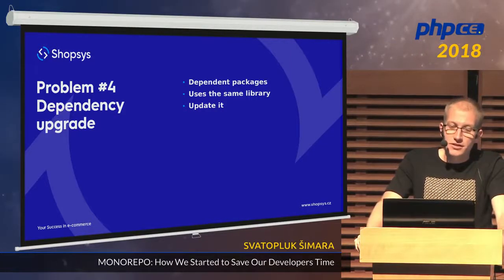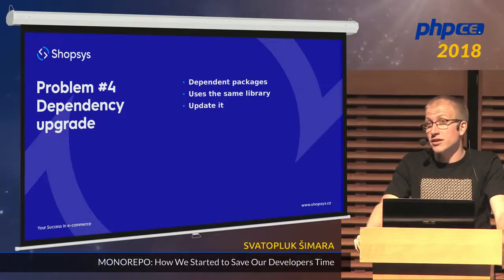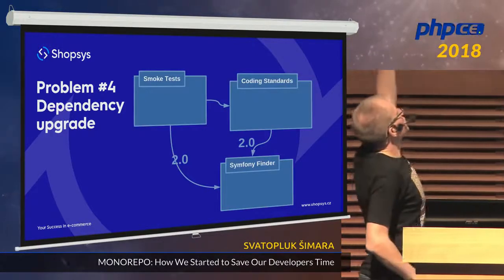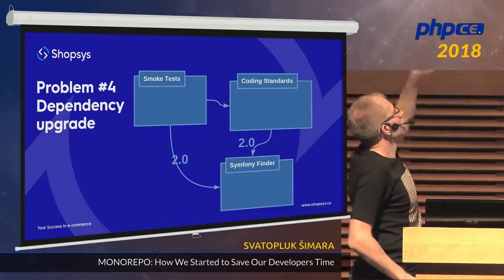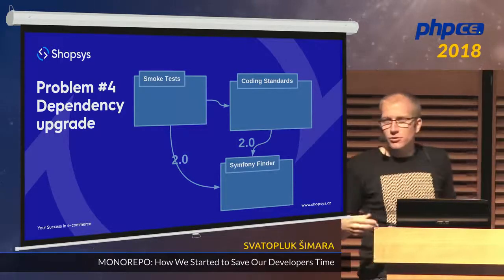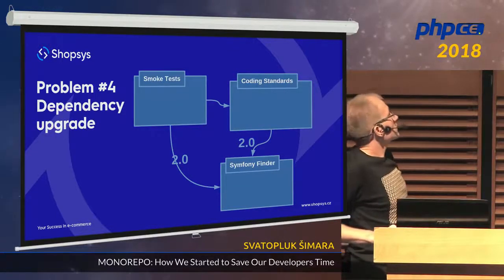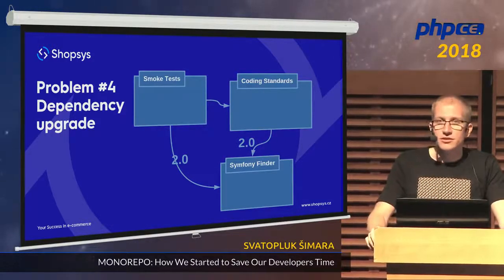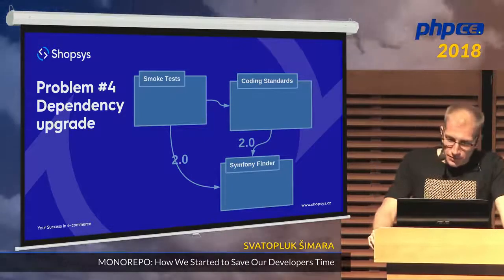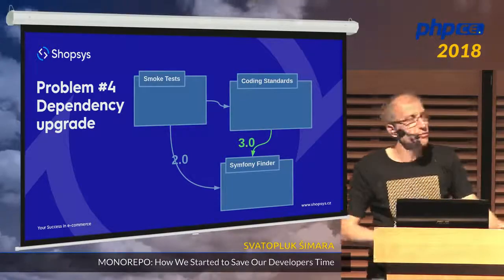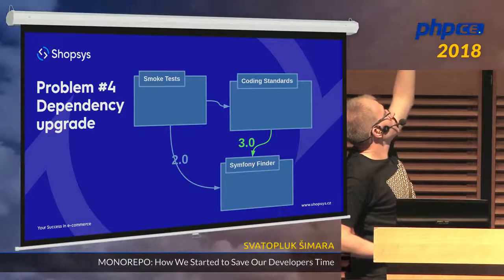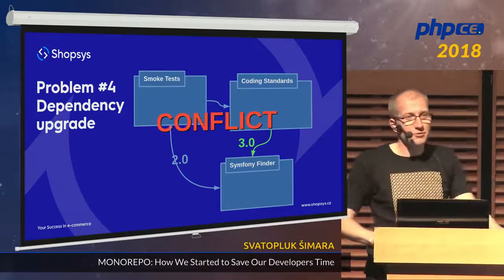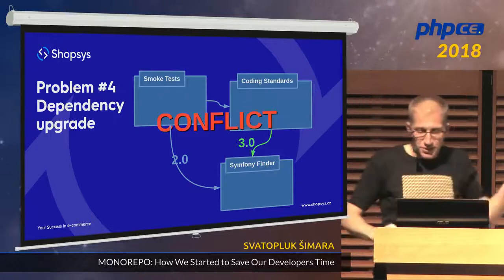Another problem: when dependent packages share the same external dependency. For example, smoke tests and coding standards both depend on Symfony Finder in some old version. We want to upgrade it, at least to version 3, maybe 4. So we update the dependency in coding standards, make changes — and this simply doesn't work because now we have a conflict. You cannot work in this fashion.